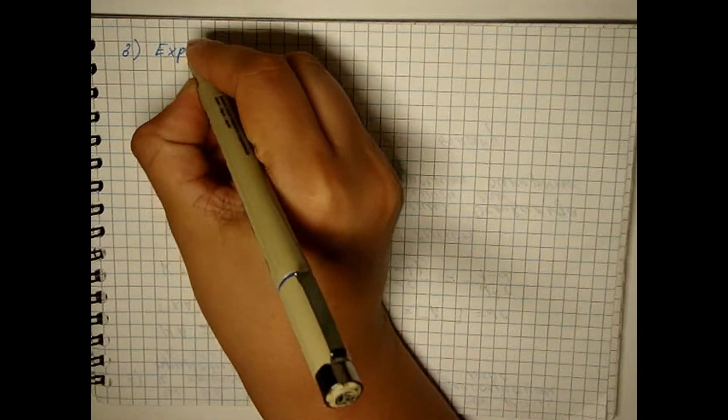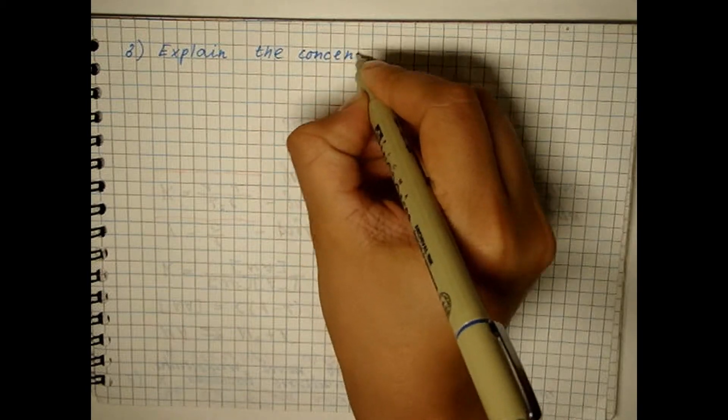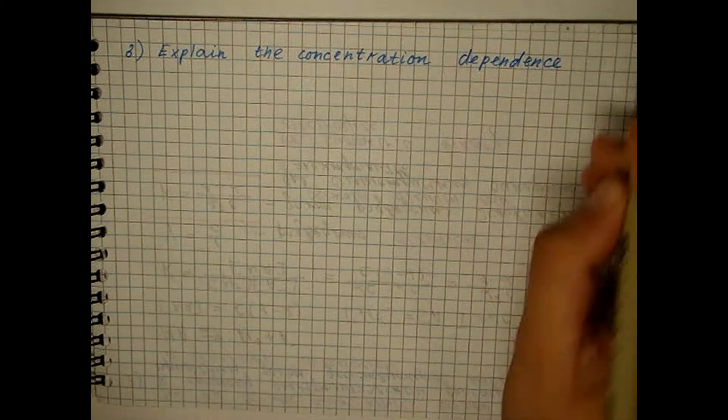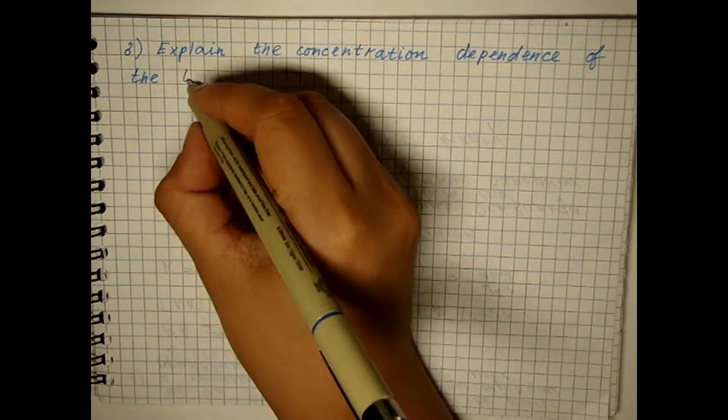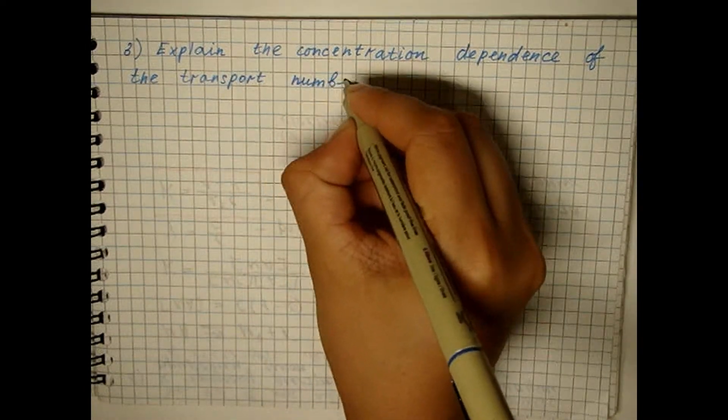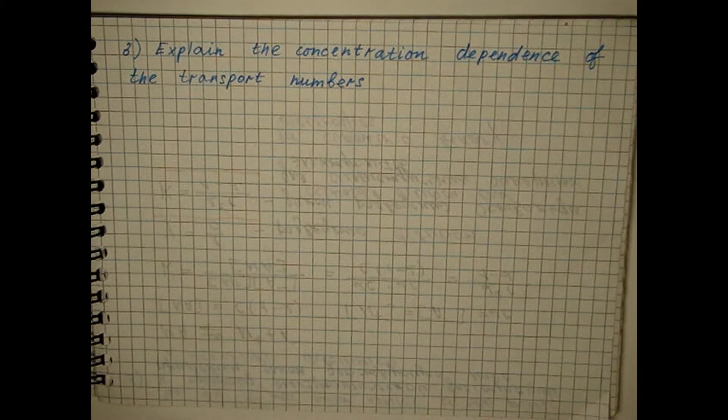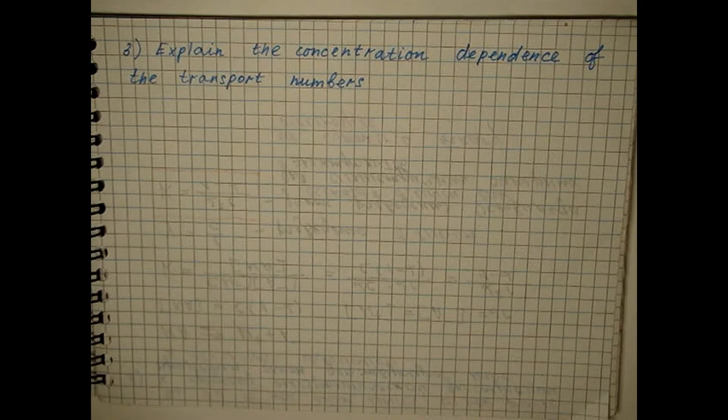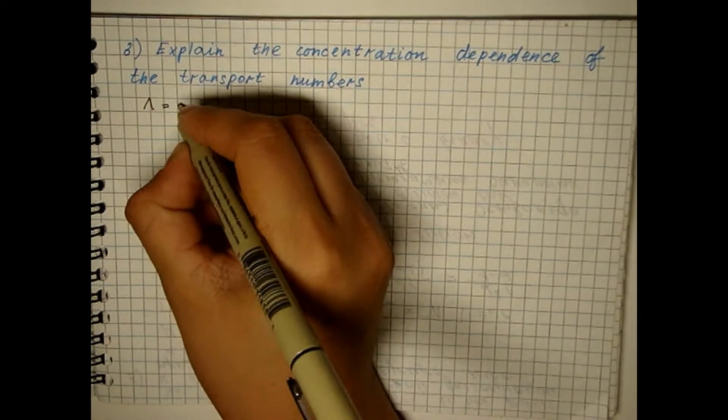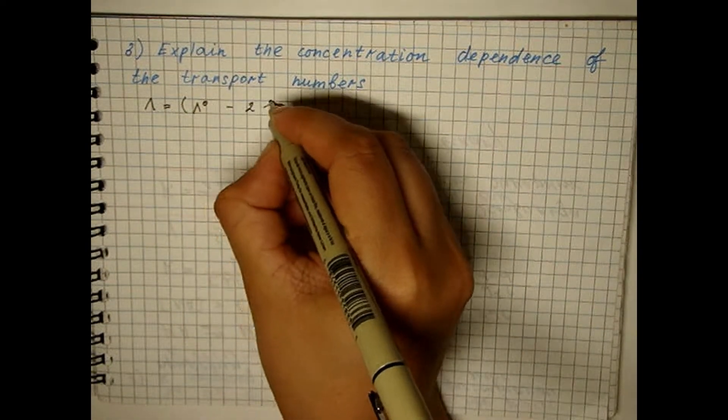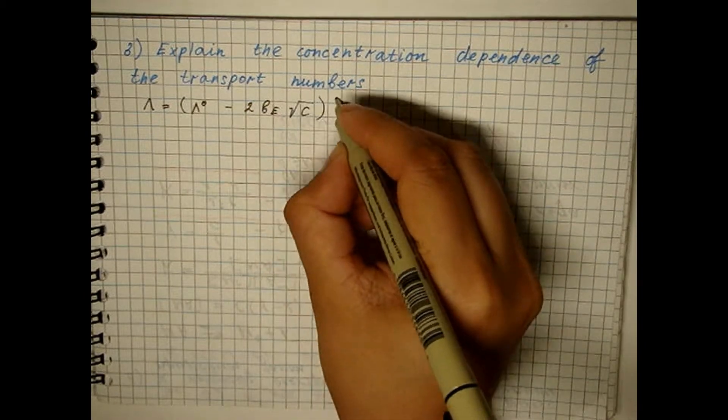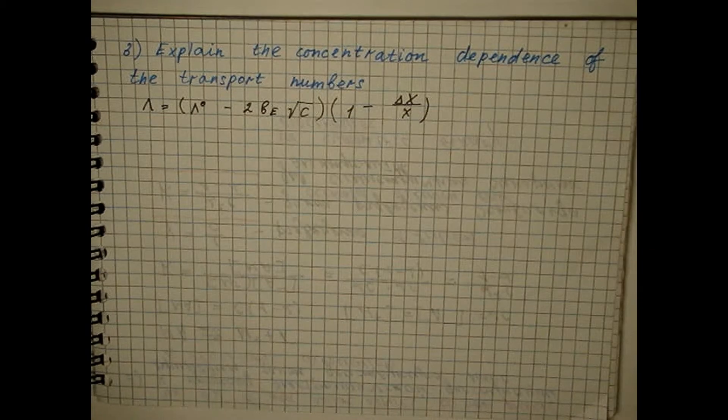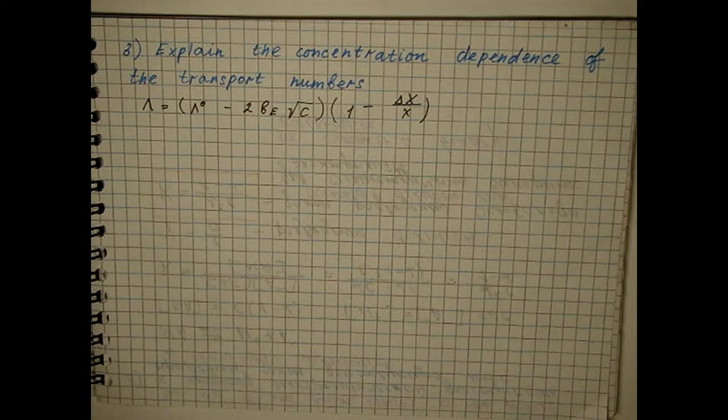The Debye-Hückel-Onsager theory can also explain the concentration dependence of the transport numbers. To do this, we write down the formula for the equivalent electrical conductivity of a monovalent electrolyte. Further, we represent the limiting electrical conductivity of a singly charged ion in the form.